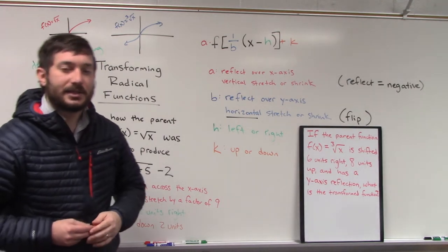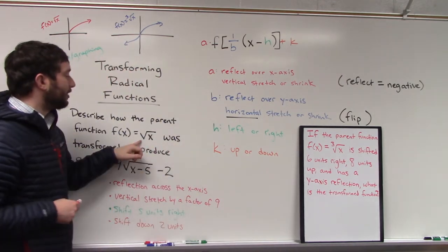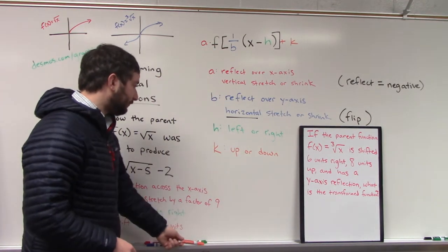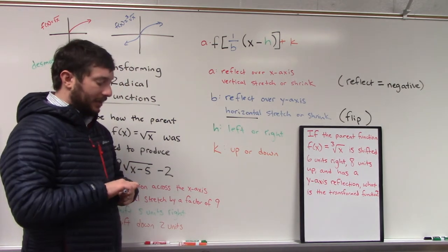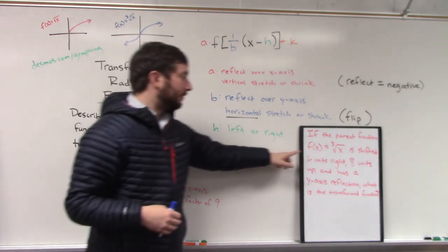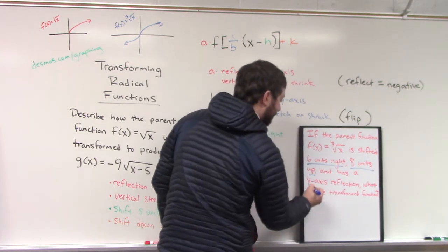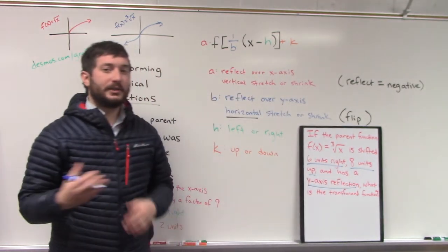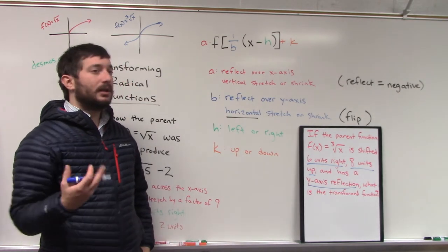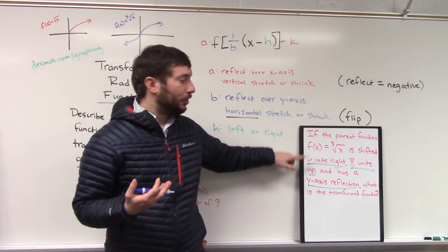That is how you describe a transformation — the same thing we talked about in our last lesson. A's, B's, H's, and K's are what we're evaluating, only now in a new context for square roots or, as we'll see, cube roots as well. In this next problem, we're given the description: shifting 6 units right, 8 units up, and a y-axis reflection. These are all different types of transformations — things that change A, B, H, or K. We want to see what's going to happen when we apply these transformations to this parent function.